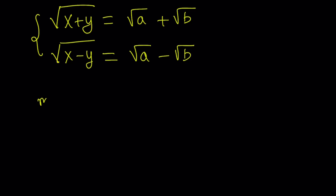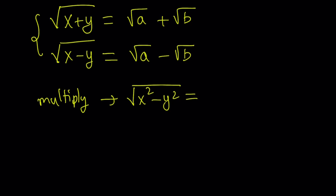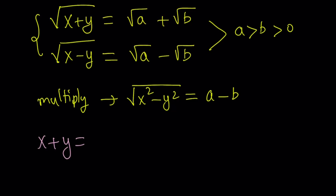Let's go ahead and multiply them. When we multiply, we can use the difference of two squares. On the left-hand side, we have the square root of x squared minus y squared. On the right-hand side, if you multiply the two expressions, we get a minus b. We want a to be greater than b and both to be positive. Now let's get another equation to make it into a system. I'm going to square the first equation. If I do, I get x plus y equals a plus b plus two times the square root of ab.